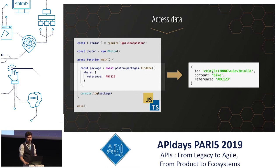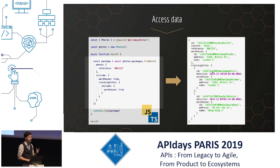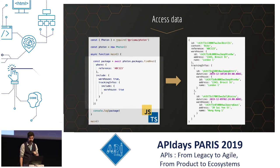If we only have the scalars — just the ID, content, and reference — and we want the relations, we can do that by asking Photon to include them. Here I include the warehouse and the tracking info, and in the tracking info I also ask to include the warehouse. And here we go — we can see that my bike is currently in London. It arrived there yesterday evening, and before that it was in Hong Kong.